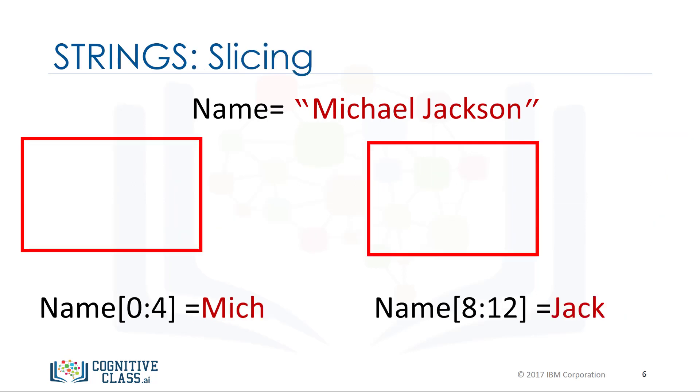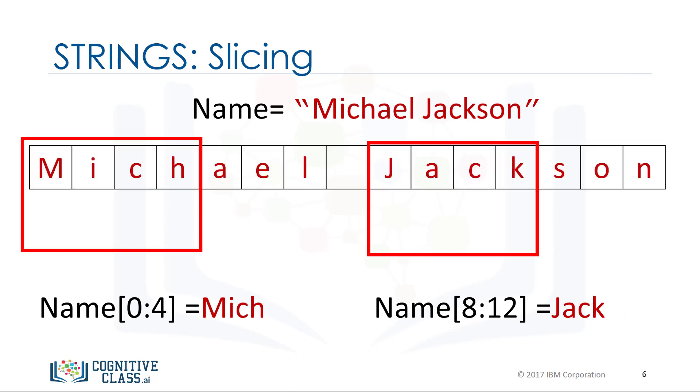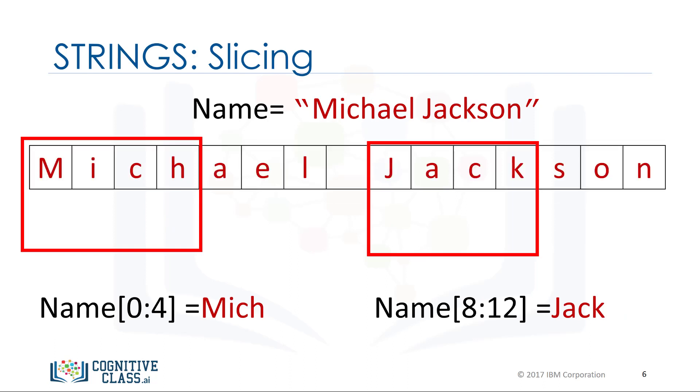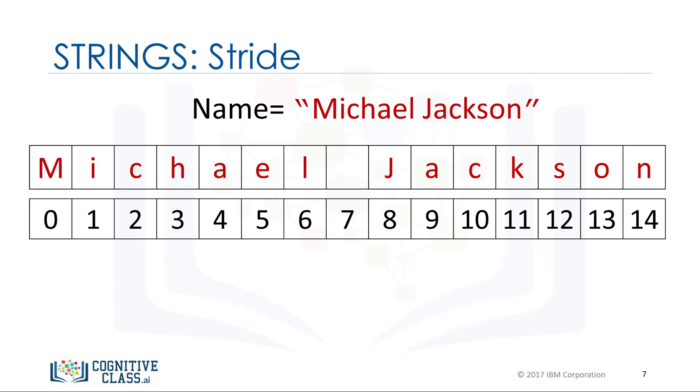We can bind a string to another variable. It is helpful to think of string as a list or tuple. We can treat the string as a sequence and perform sequence operations. We can also input a stride value as follows.